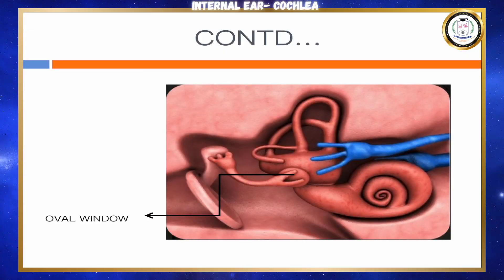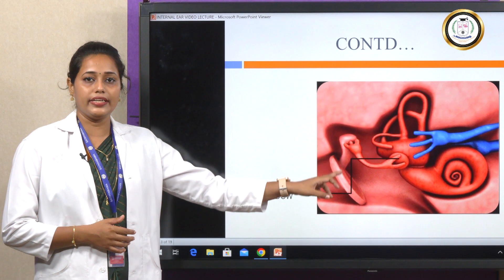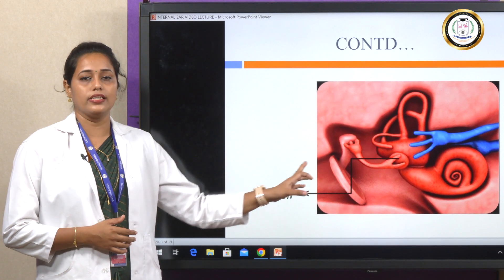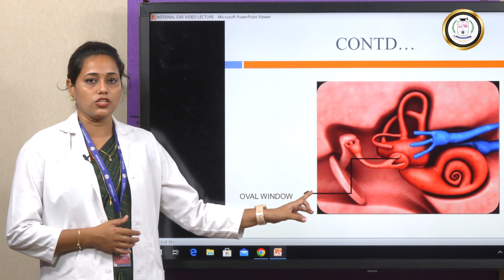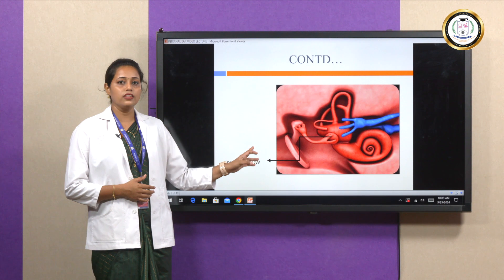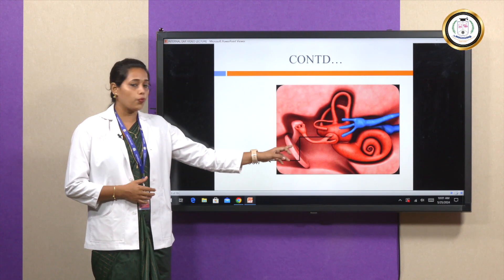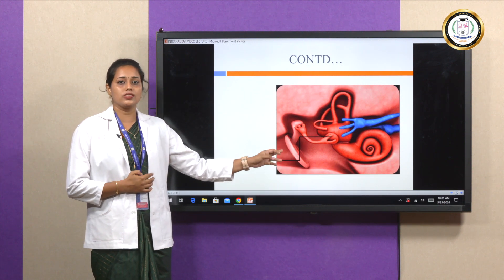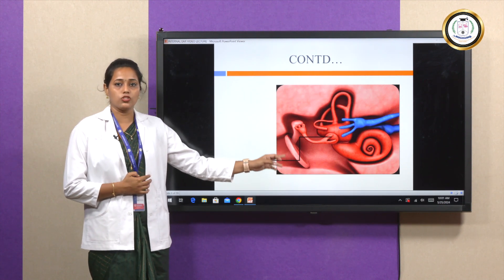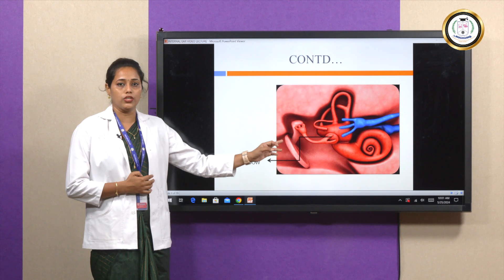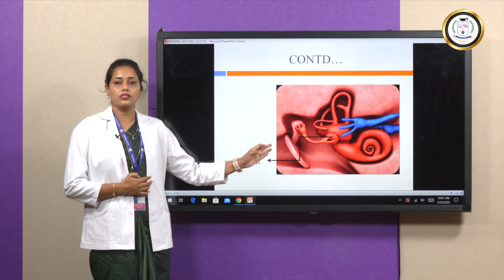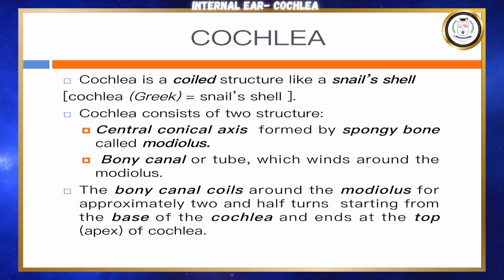The middle ear is present here. The tympanic membrane is connected to the auditory ossicles, which is a connecting structure that connects the middle ear to the internal ear. We have the stapes bone which is attached to the oval window, which is part of the internal ear.